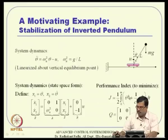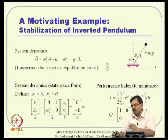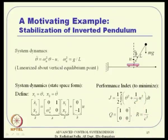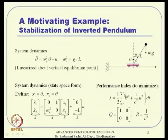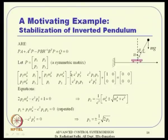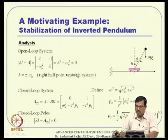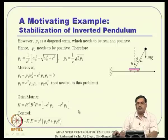It is also desirable to include a θ-dot term in the cost function, since θ should not only go to zero but also should not keep oscillating around zero. An improved cost function would include Q1 θ^2 + Q2 θ-dot^2. Reworking the example with this extended cost function, including the θ-dot penalty, is left as an exercise.